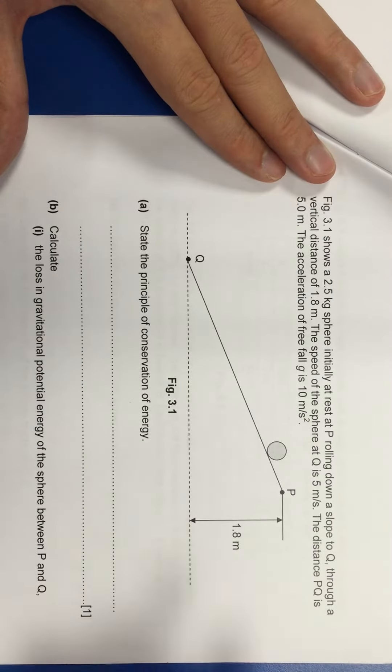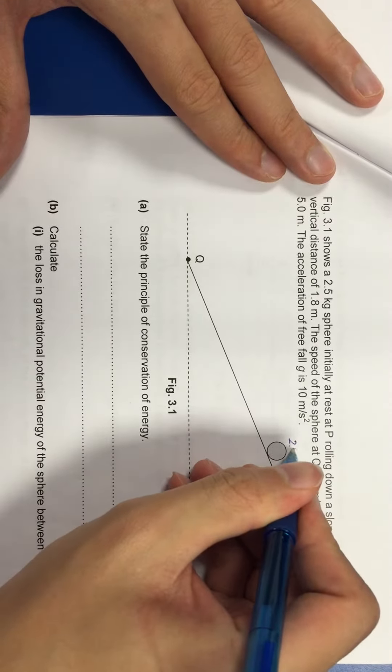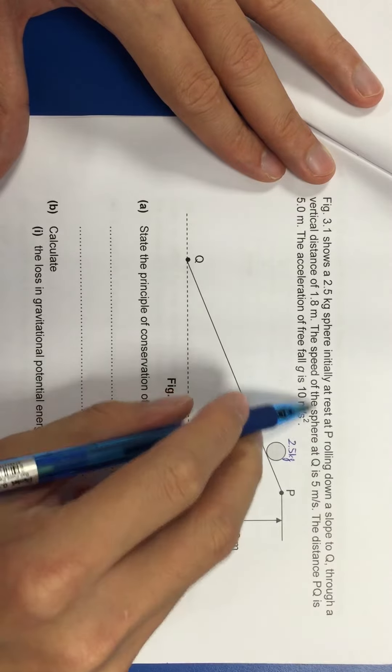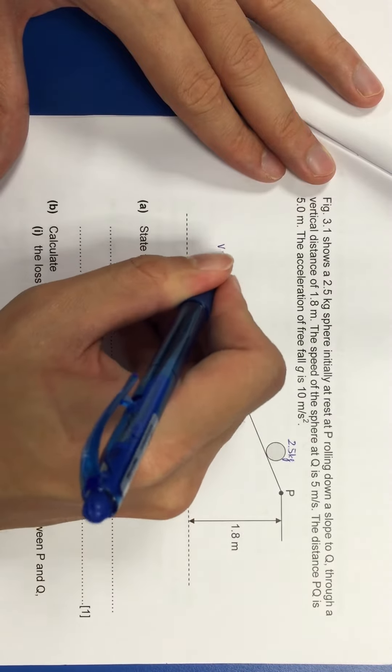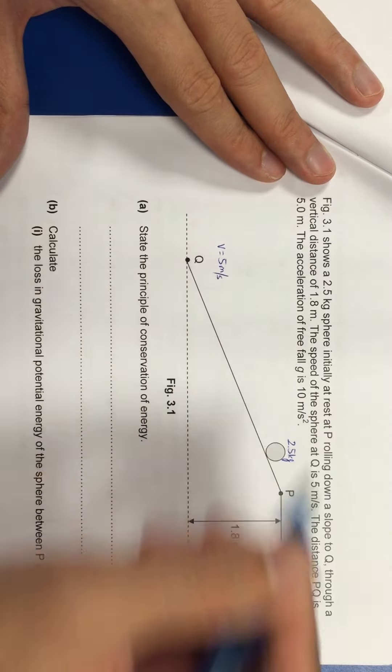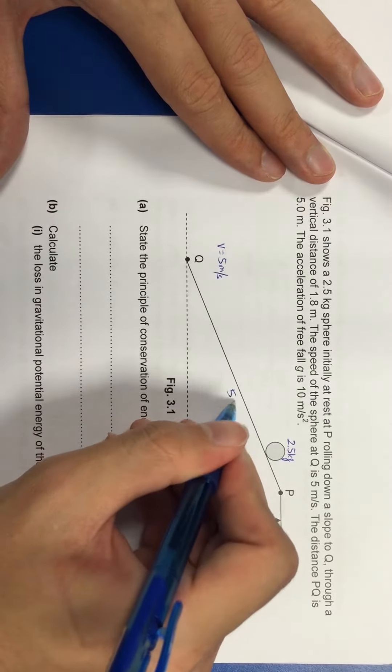This one is your energy question. Just label out all the things first. This is 2.5 kg. Vertical distance is 1.8. Speed of sphere at Q is 5 meter per second. Distance PQ is 5 meter.